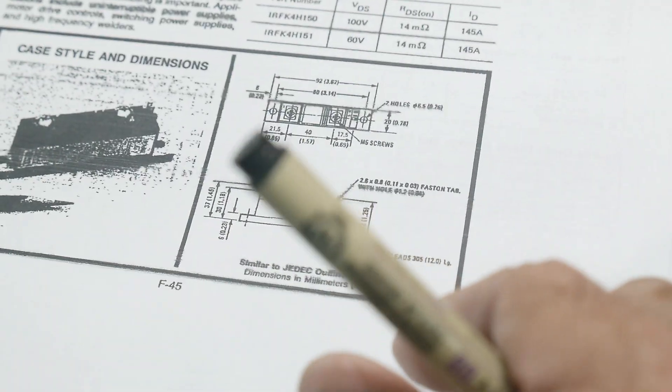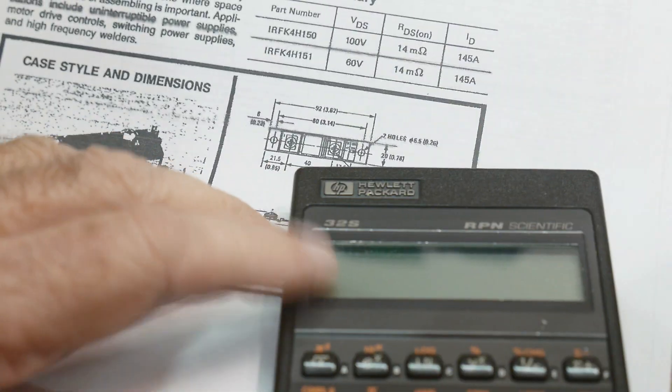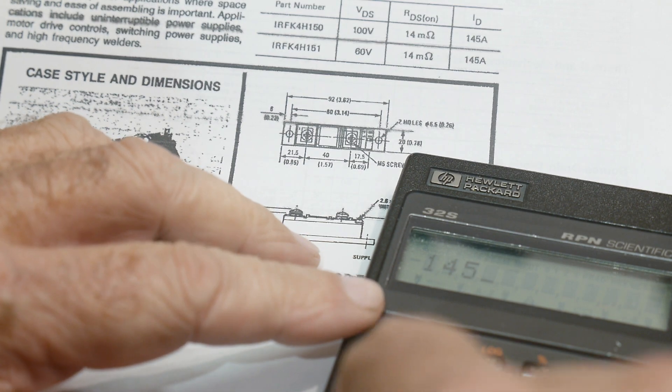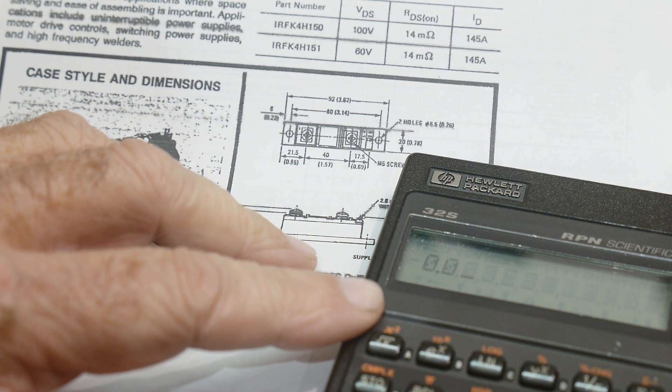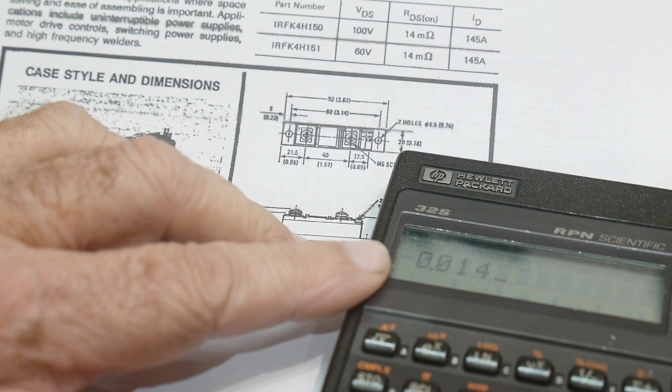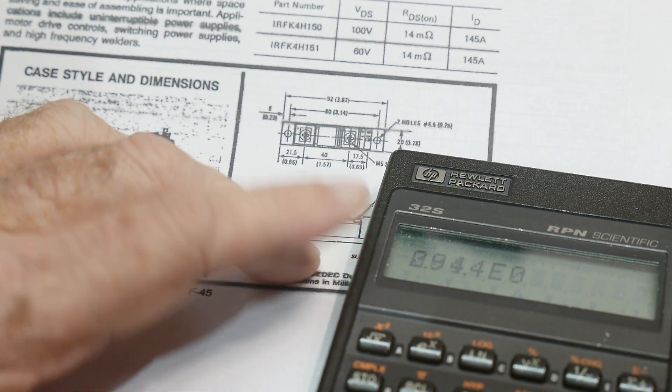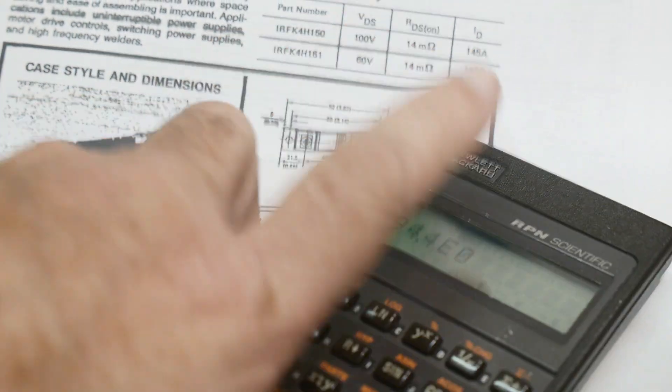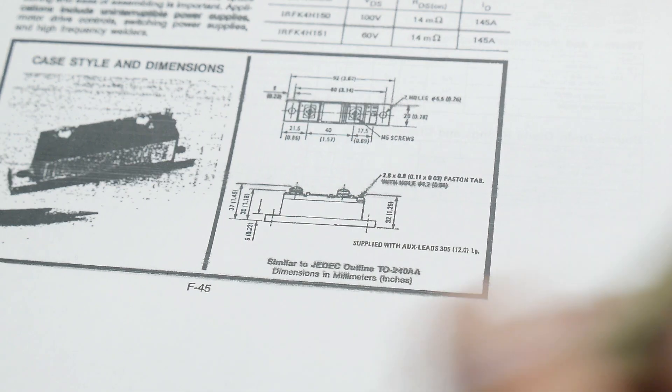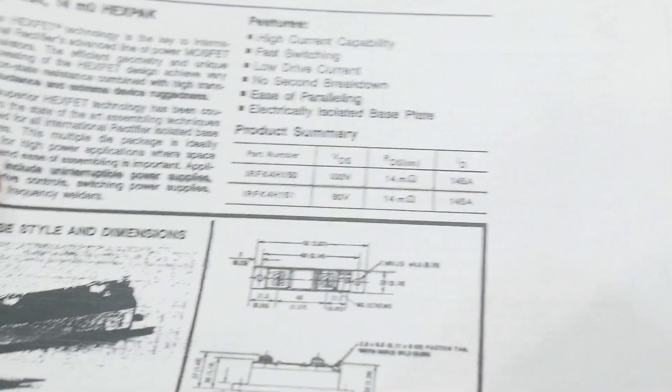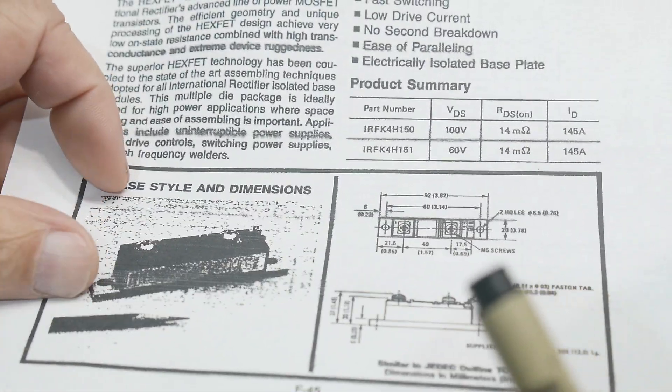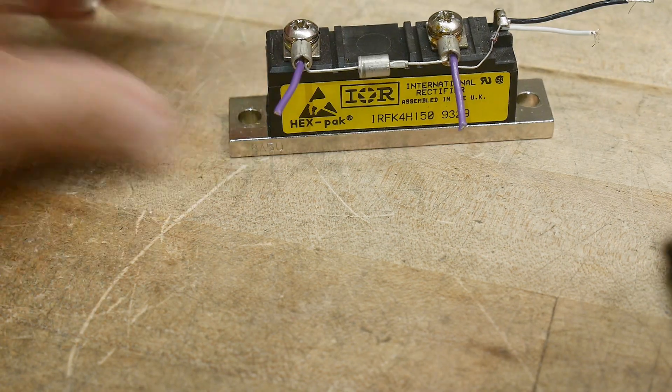So let's do some calculation. If we had I squared R, so 145 amps times 0.014 ohms is 295 watts. 295 watts. Yikes. That's a bruiser of a transistor. Okay.